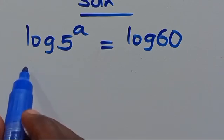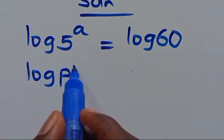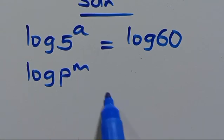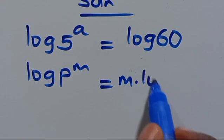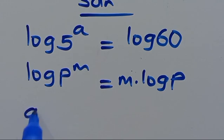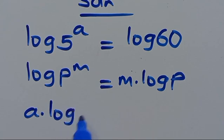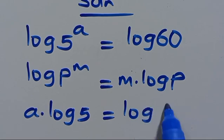Then recall that when we have log P to the power of M, the power M will come down to become M multiplied by log P. Likewise happening here, we are going to have A come down multiplied by log 5 equals log 60.